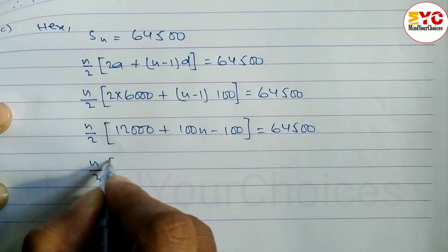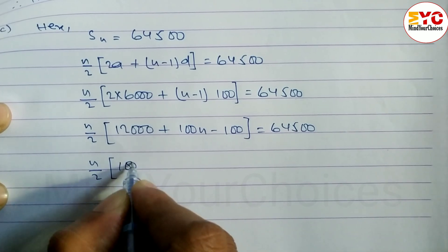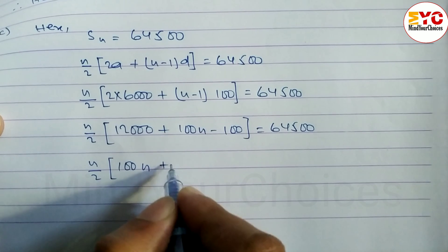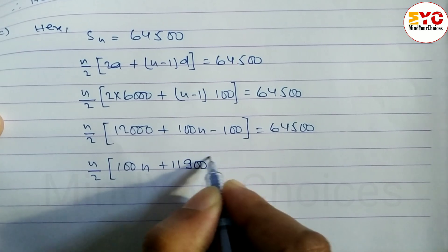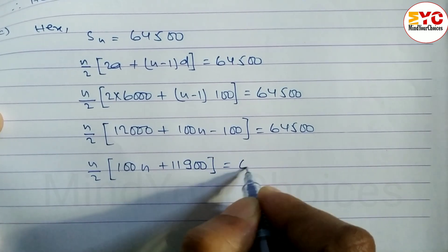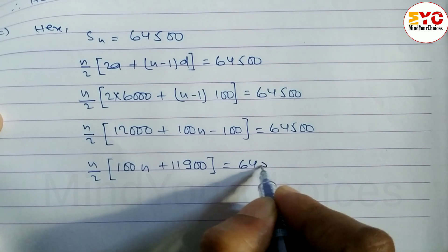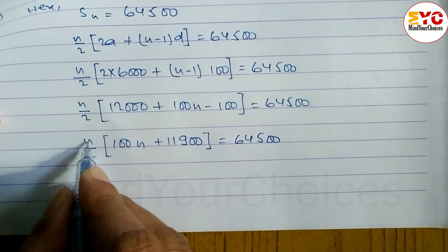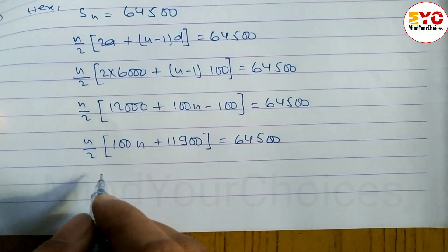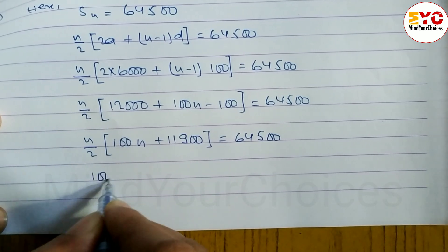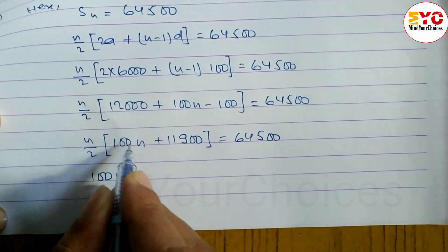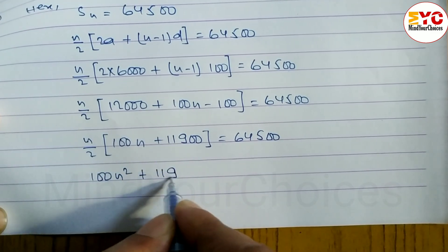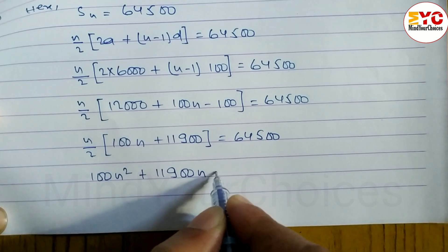Simplifying: n/2 × (11,900 + 100n) = 64,500. Expanding: 100n² + 11,900n = 2 × 64,500 = 129,000. So we can write 100n² + 11,900n − 129,000 = 0.